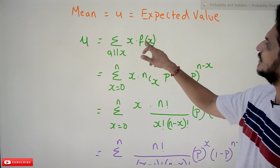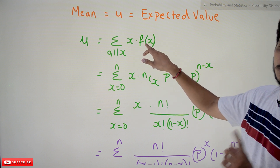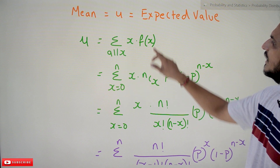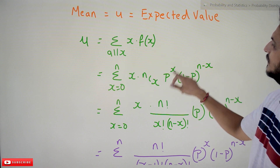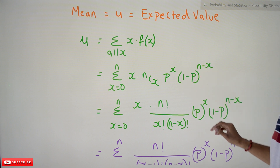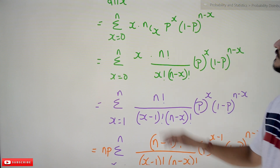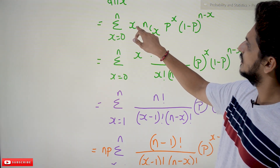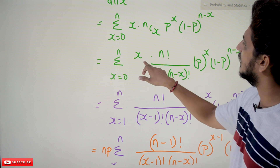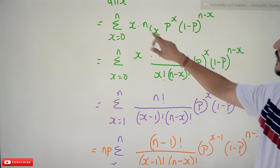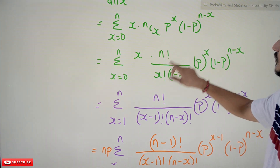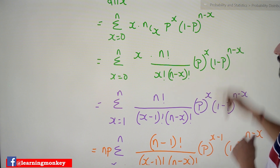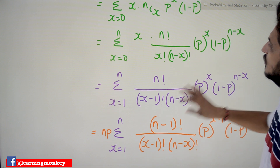Now we substitute in place of f(x) the probability mass function: Σ (x=0 to n) of x · nCx · p^x · (1−p)^(n−x). Expanding nCx, we write x · [n! / (x! · (n−x)!)] · p^x · (1−p)^(n−x).